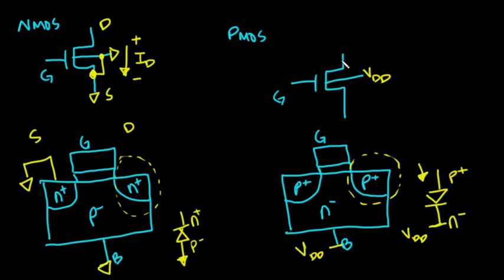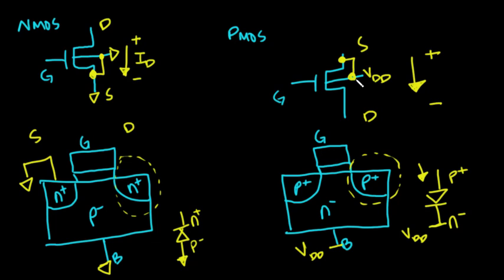For the PMOS transistor, we're going to bias the body at VDD. Now let's talk about the source and drain nodes. We've defined the current to flow from positive to negative potential, and for the PMOS device the current is opposite — so this is the source and this is the drain. Just like the NMOS device, you can tie the source of the PMOS device to the body, and it works fine because now your body is biased at the highest potential in the circuit and you won't have current flowing where you don't want it.